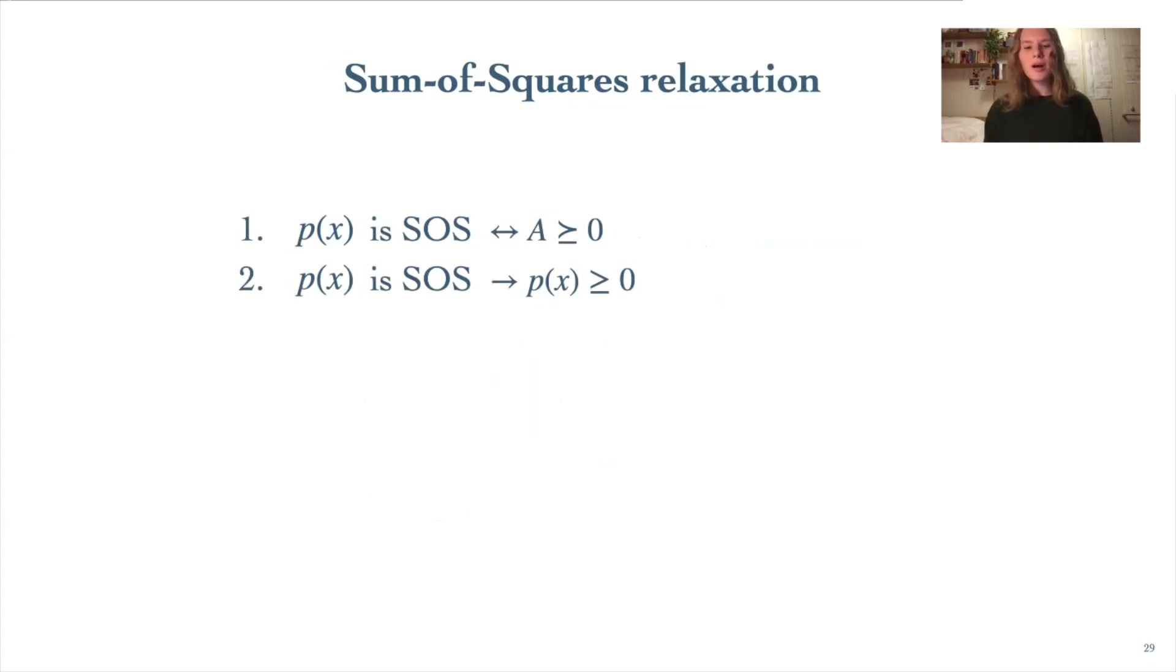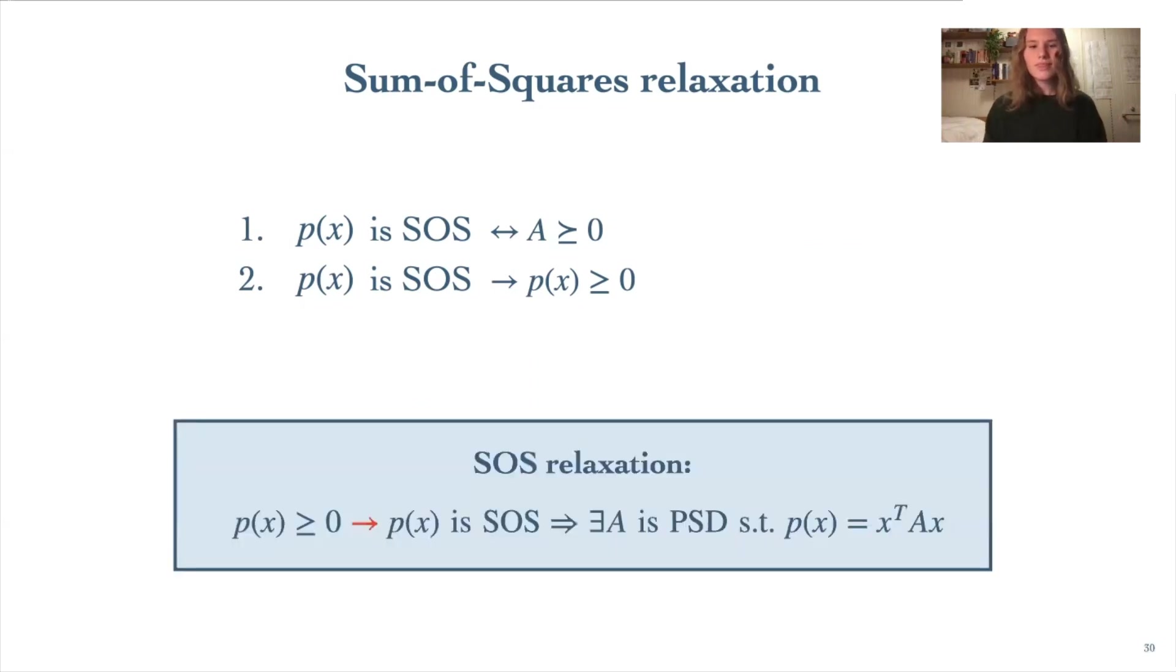Earlier, I also talked about how if a polynomial is SOS, it's definitely positive everywhere, although the converse does not generally hold. So with these two facts, we can now understand SOS relaxation. The core motivation here is that we have a lot of existing methods to solve semi-definite optimization problems, or SDPs. And we've seen that constraining a polynomial to be SOS is equivalent to constraining a matrix to be PSD. So if we have a polynomial positivity constraint, we can relax it into a constraint that's actually computationally tractable by instead of constraining our polynomial to be positive, constraining it to belong to the tighter class of SOS polynomials. This allows us to transform a polynomial positivity constraint into an SDP constraint, allowing our problem to then be more easily solved with existing methods.